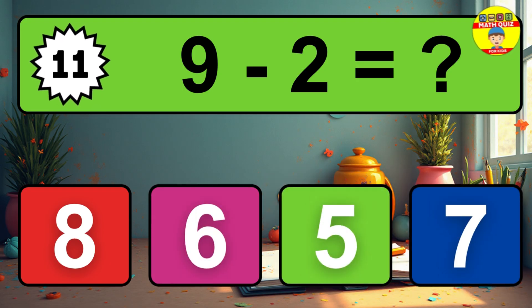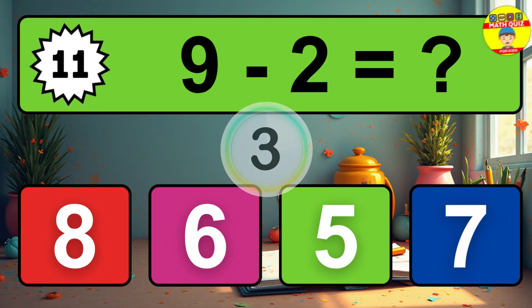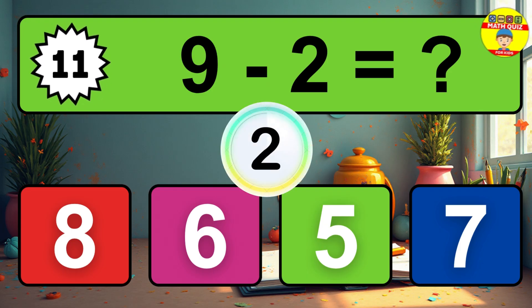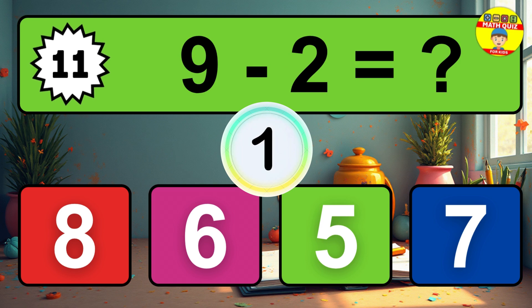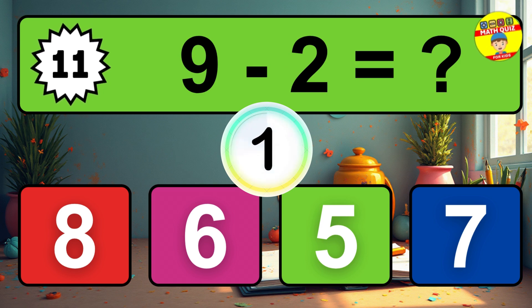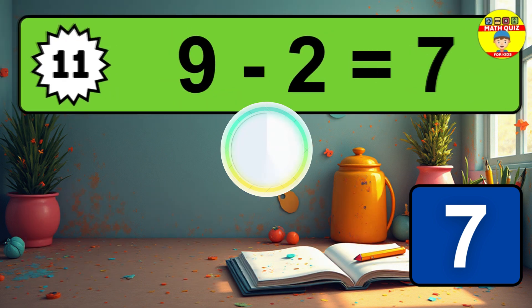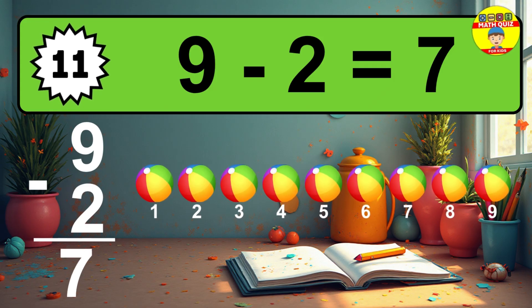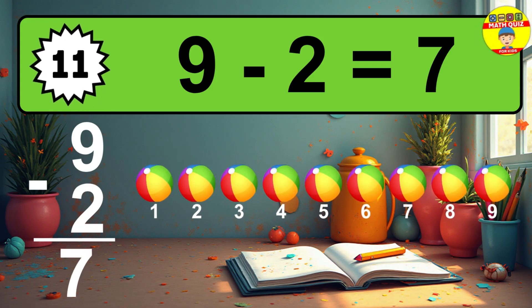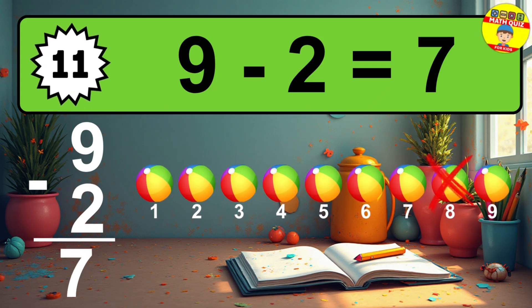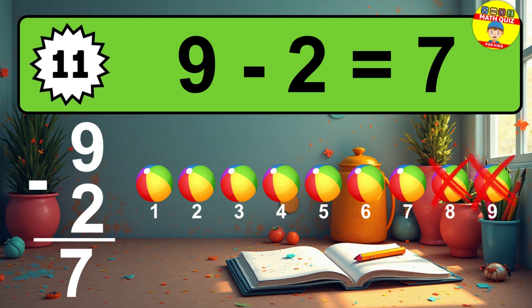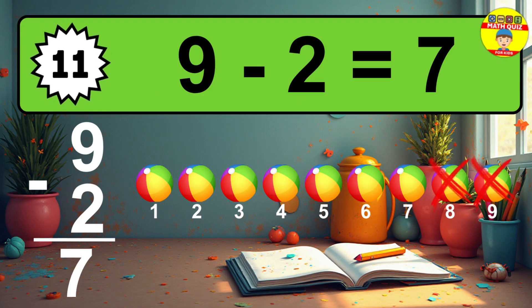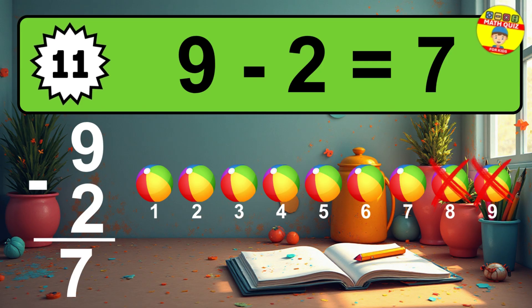Question 11. 9 minus 2 equals what? So the answer is 9 minus 2 is 7. Let's count it. 1, 2, 3, 4, 5, 6, 7.